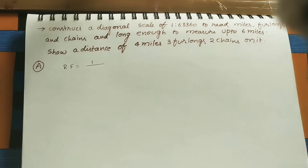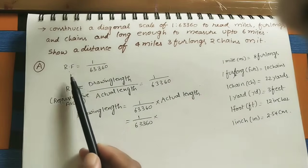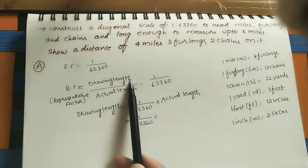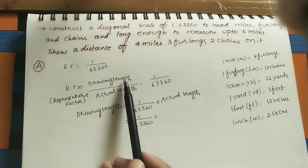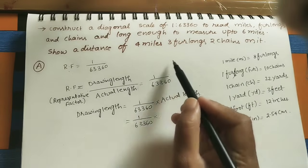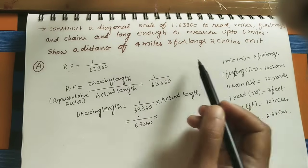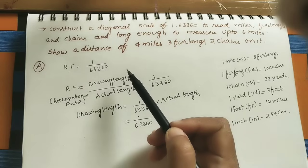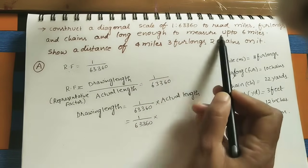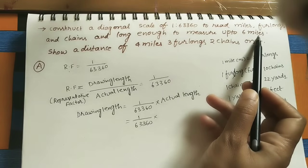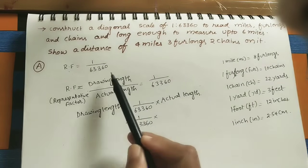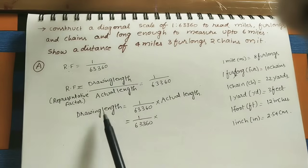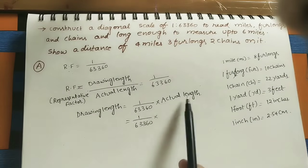The RF value is given as 1:63,360. RF is the representative factor — it is the ratio of drawing length to actual length. Drawing length is what we draw on the sheet, in centimeters or millimeters. Actual length is the limit of the scale. Here the scale should measure up to 6 miles, so that is the actual length. We need to find the drawing length — how much length we draw on the sheet. Drawing length equals RF value multiplied by actual length.